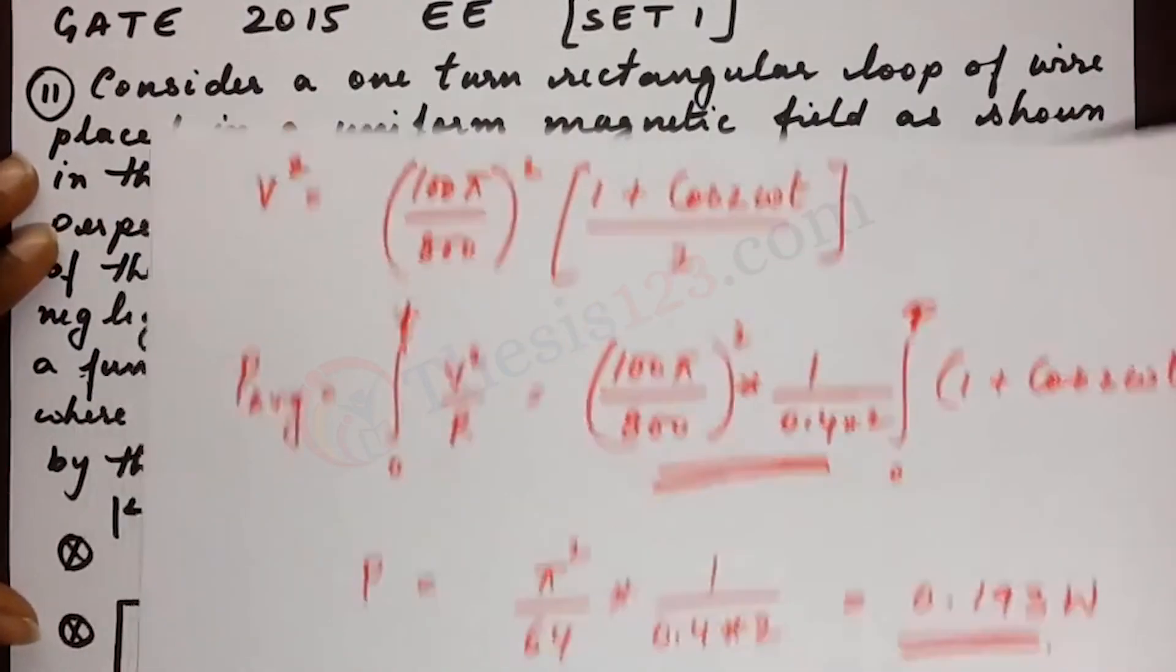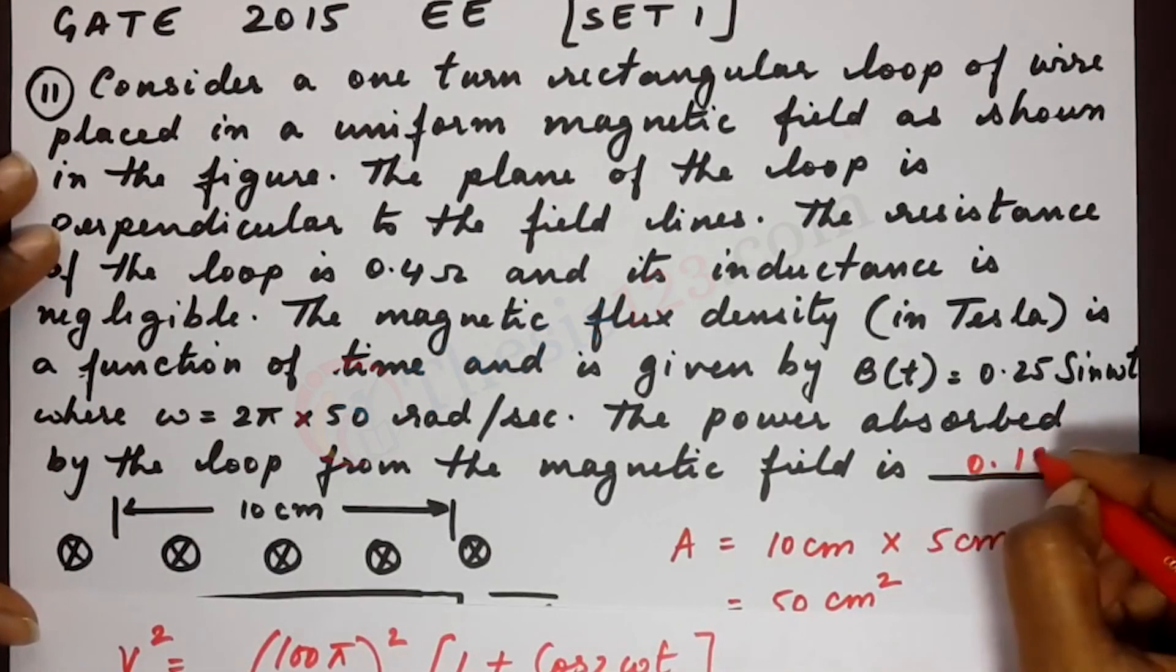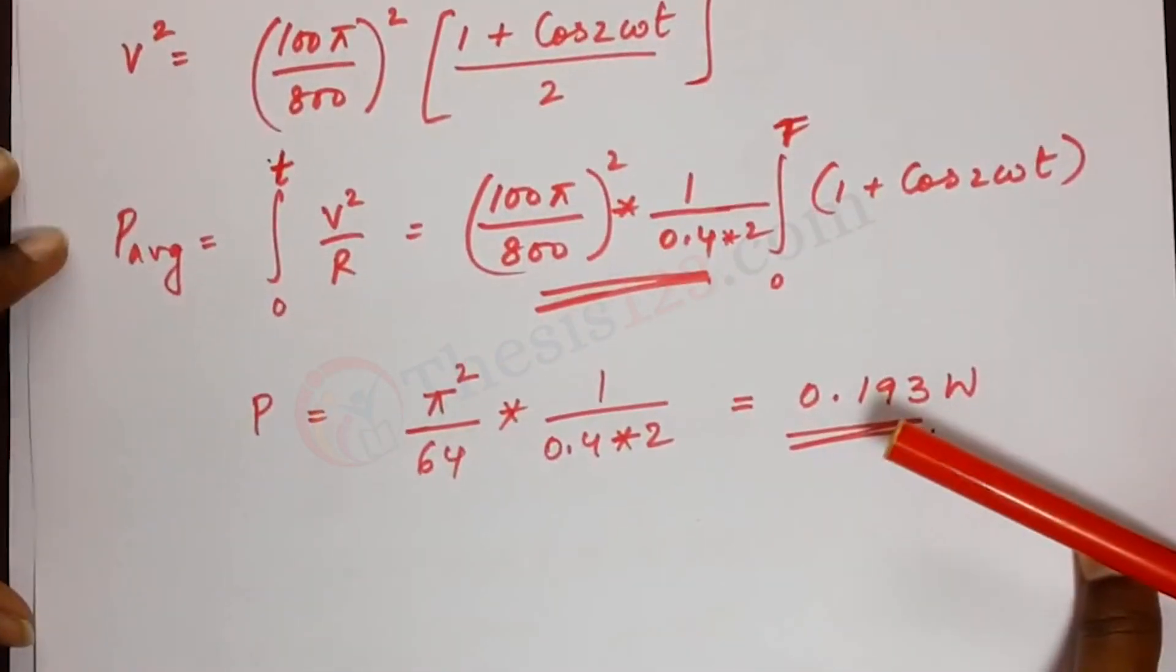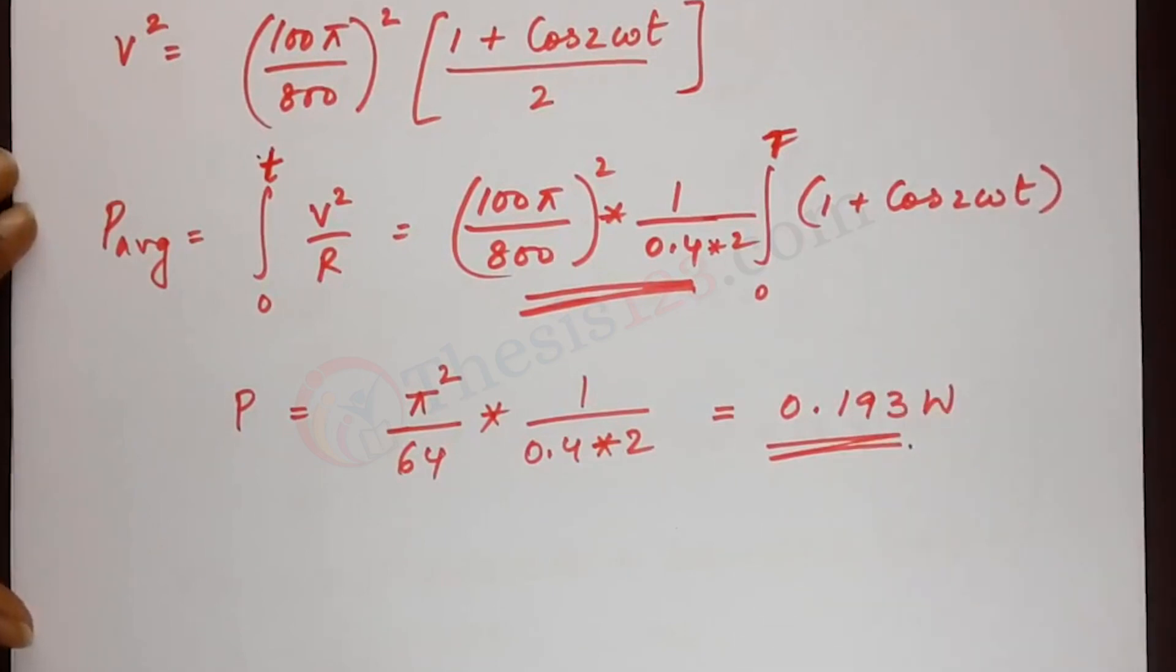We'll note that down. That's 0.193. So that's the solution and I hope it has helped.